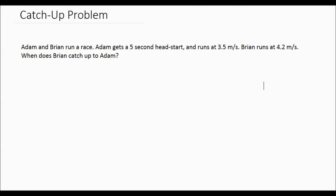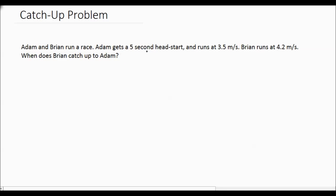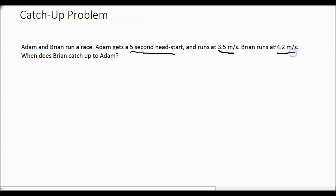Like many problems in physics, a catch-up problem can be best approached by using the four steps. First, we write down our knowns and our unknowns. We have Adam and Brian running a race. Adam gets a five-second head start and runs at 3.5 meters per second. Brian runs at 4.2 meters per second. When does Brian catch up to Adam? So we have the five-second head start, 3.5 meters per second, 4.2 meters per second, and the question: when does Brian catch up?